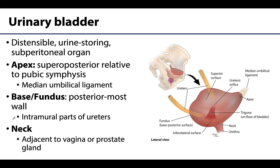There are numerous surfaces and parts of the bladder, but we're going to focus on three, starting with the apex. The apex of the bladder always faces towards the pubic symphysis and will be superior and posterior to it. The pubic symphysis, recall, is that cartilaginous joint on the anterior portion of the pelvic girdle. Recall that the median umbilical fold — formed by peritoneum covering the median umbilical ligament — is a remnant of the urachus, which connects the apex of the bladder to the umbilicus.